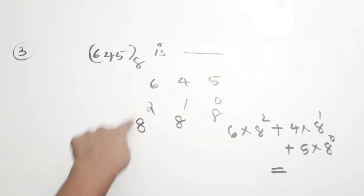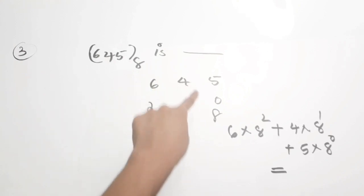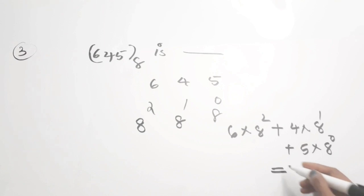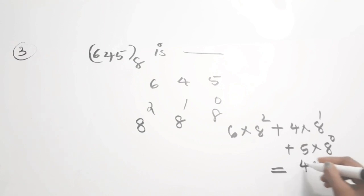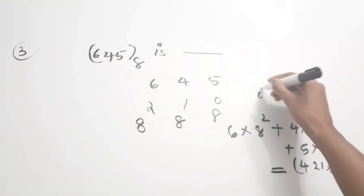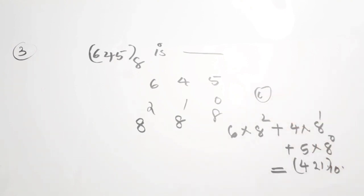So 8² × 6 + 8¹ × 4 + 8⁰ × 5 gives the number 421 to the base of 10. From the options, the correct option is option C, 421 to the base of 10.